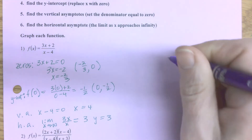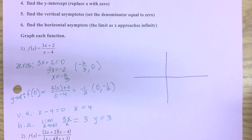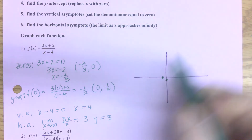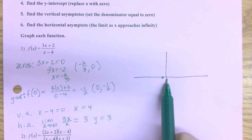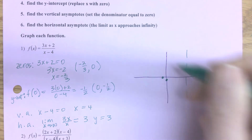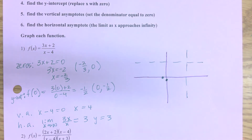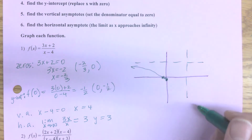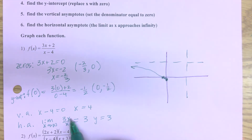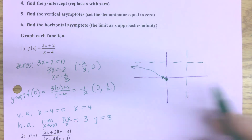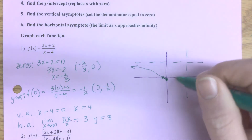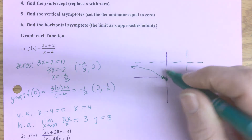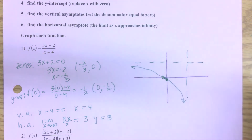Now I'll put this all together on the graph. It can feel like there's not enough information, but really there will be. I have (-2/3, 0) and (0, -1/2), an asymptote at x = 4, and another at y = 3. I know these two points have to connect, and I know the end behavior on the left has to approach that horizontal asymptote. On the right it can't come back up through because I only have one zero — there's only one place to cross the axis.